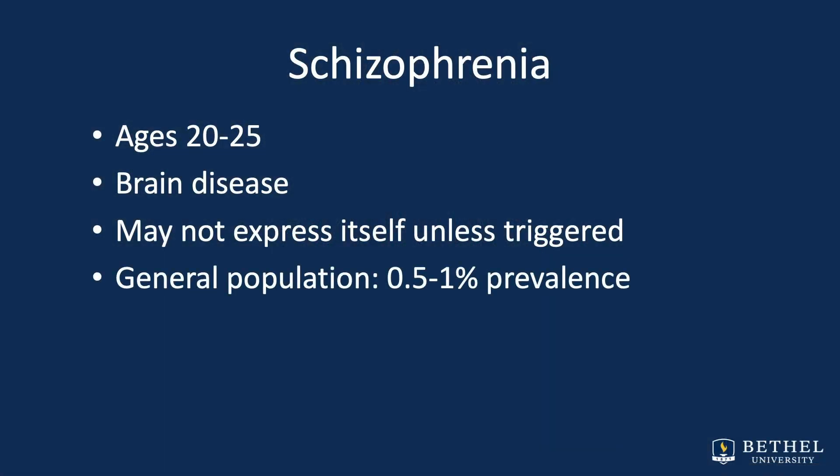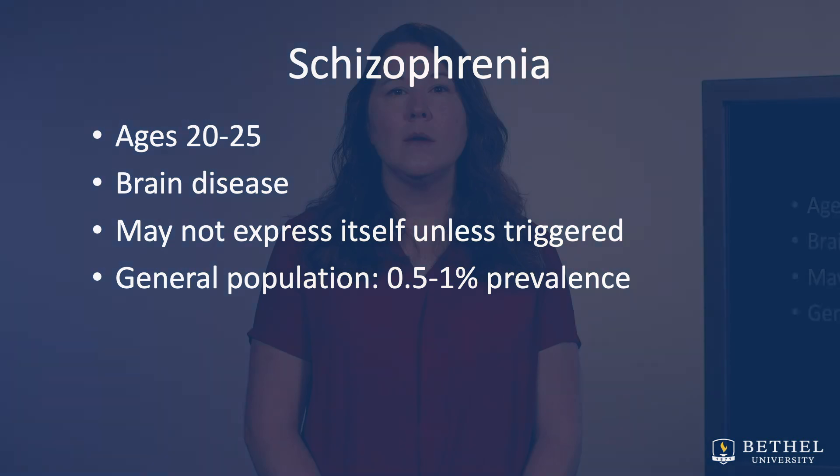In the general population, it's 0.5 to 1%. Ultimately, both Dissociative Identity Disorder and schizophrenia are complex disorders and must be assessed very carefully. I do hope that as you dive into the materials for this module, you found this quick overview helpful as you learn to distinguish dissociation and schizophrenia.